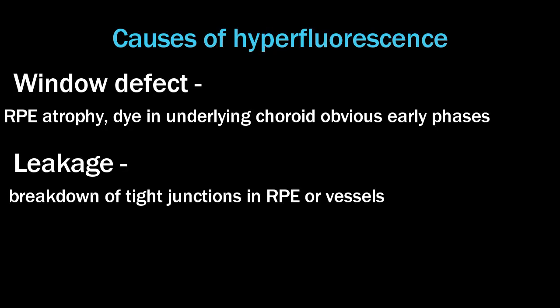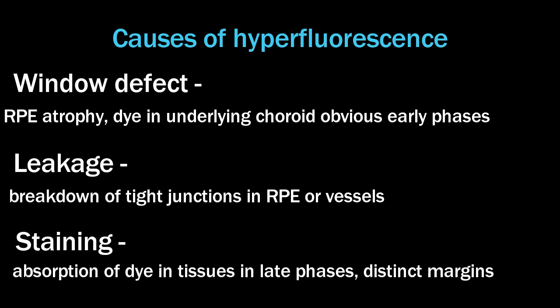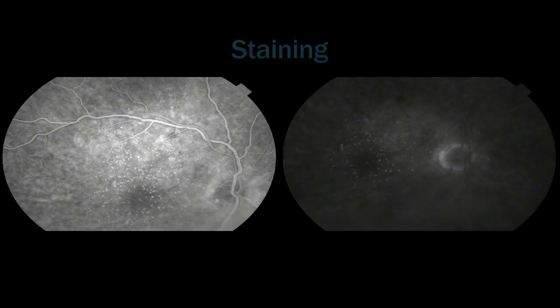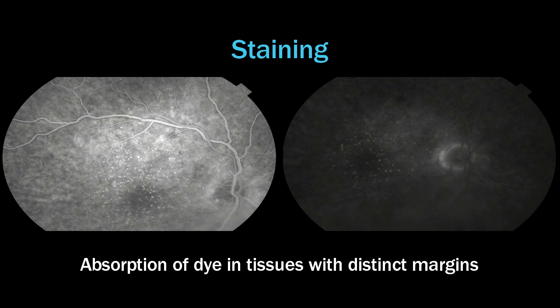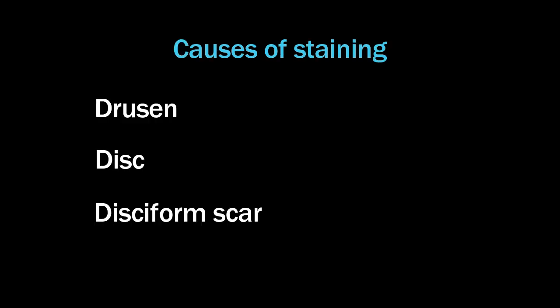The third cause of hyperfluorescence is staining, which is when certain structures absorb the dye and then fluoresce. Classically, you cannot call it staining before two minutes, because if you do, people will raise an eyebrow. Things that stain include drusen and similar structures.